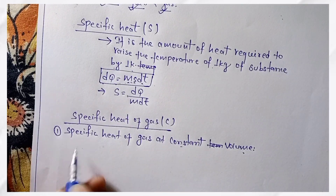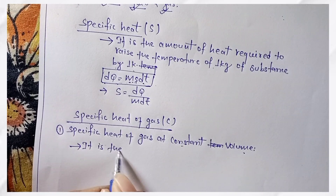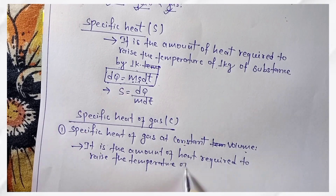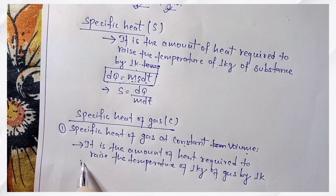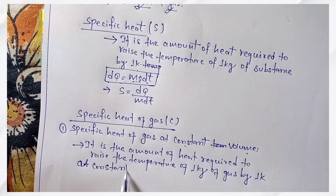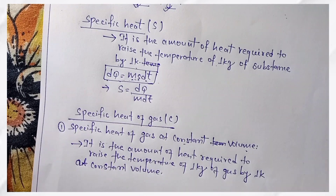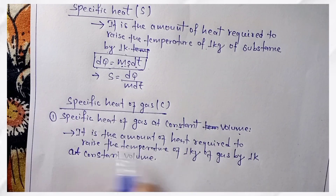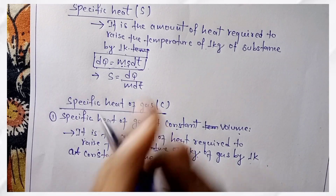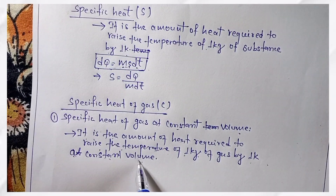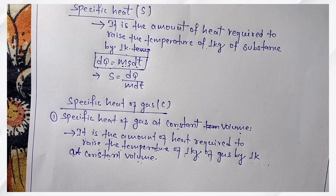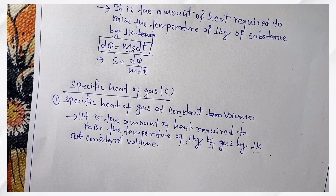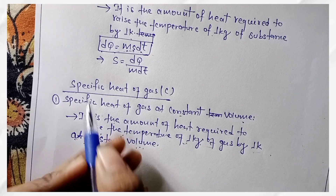The definition of specific heat at constant volume: it is the amount of heat required to raise the temperature of 1 kg of gas by 1 Kelvin at constant volume. At constant volume, how much heat is needed to raise 1 kg of gas by 1 Kelvin — that is the specific heat at constant volume.